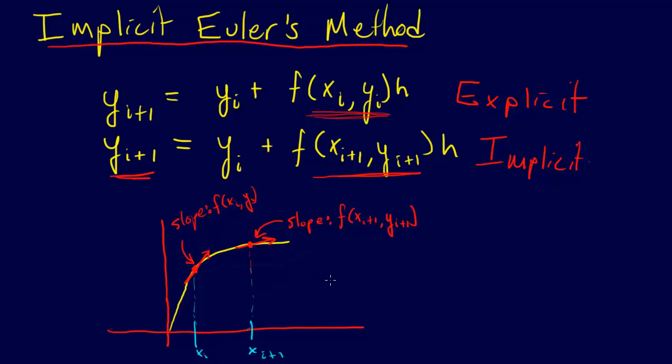And so the nice thing about the implicit Euler's method is that it is unconditionally stable in some circumstances. So the stability doesn't depend on the step size h.